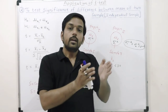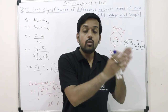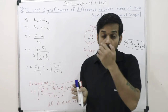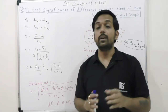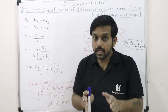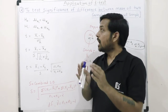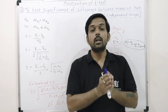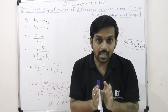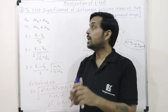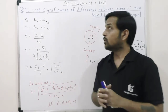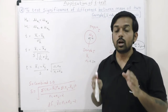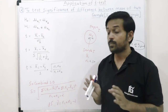After calculating t, we compare it to the tabulated t with a certain degree of freedom and level of significance. If calculated t is greater than tabulated t, we reject the null hypothesis and say the difference between both means is significant. If calculated t is less than tabulated t, we accept the null hypothesis and say the difference between both means is not significant — the means are equal.